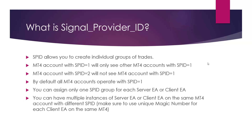But if you want to do that, there is an advanced workaround. You can have multiple instances of server EA or client EA running on the same MetaTrader account with different SPID numbers. Just make sure to use a unique magic number for each client EA on the same MetaTrader account. For example, you can have a first master account operate for SPID 1 and SPID 2, and a second master account operate only for SPID 3. This advanced setup is not covered in much detail in this video.